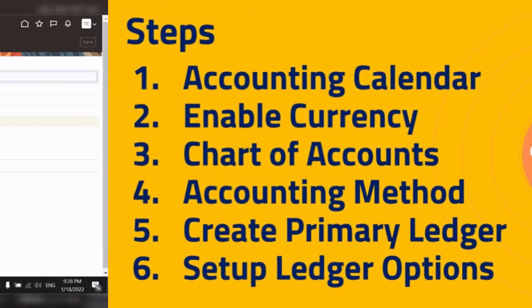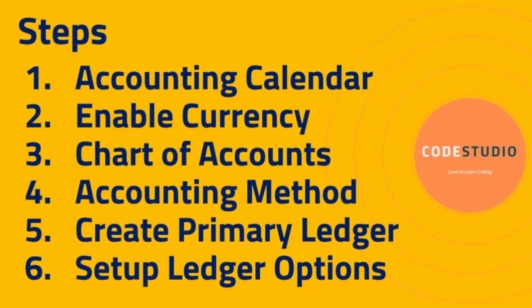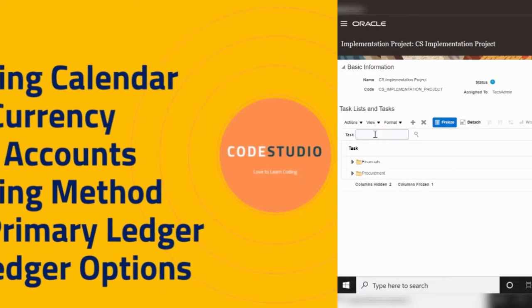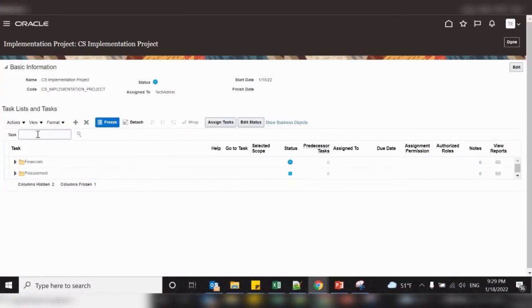Now we can see the newly created calendar. The second step is to enable the currency, also called the ledger currency or functional currency, which is required to associate with the primary ledger and also used by transactions in subledger applications. By default, all currencies are enabled by Oracle, but make sure the currency you need for your primary ledger is enabled. You can also disable currencies which the company does not require. Let us see how to enable or disable the currency — search manage currencies.